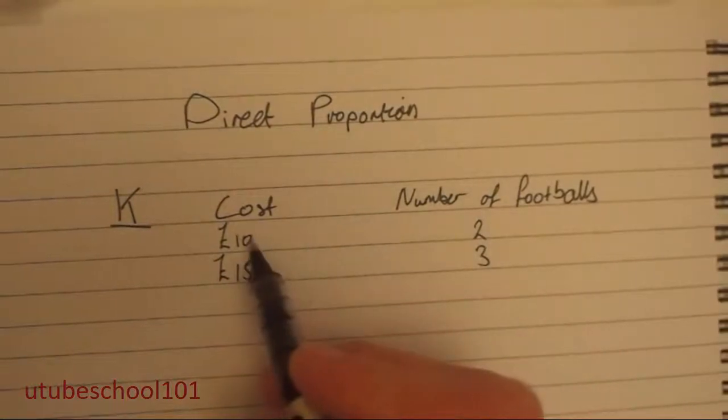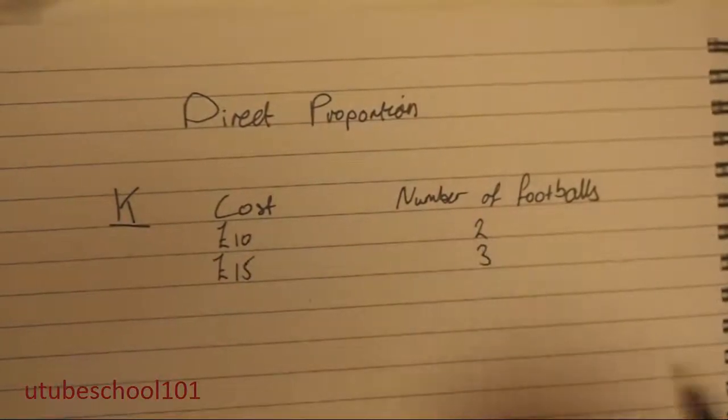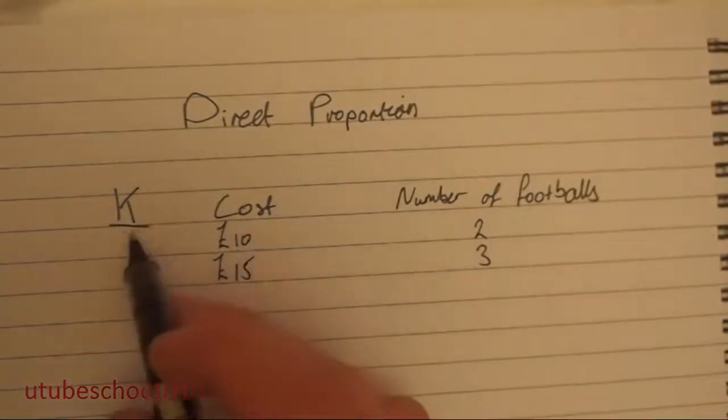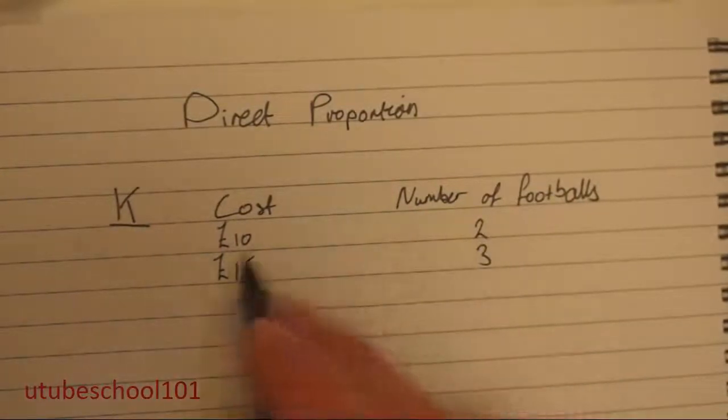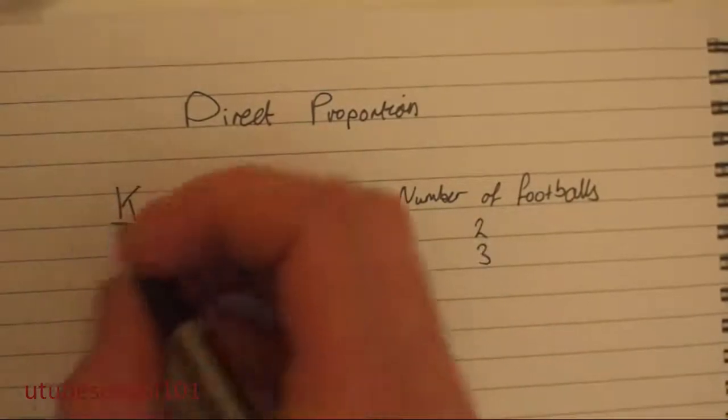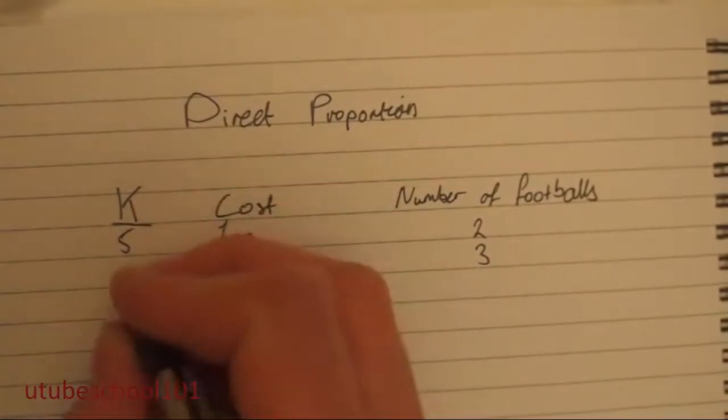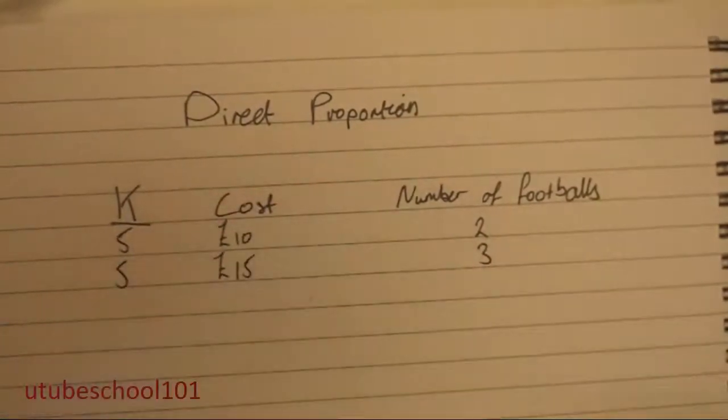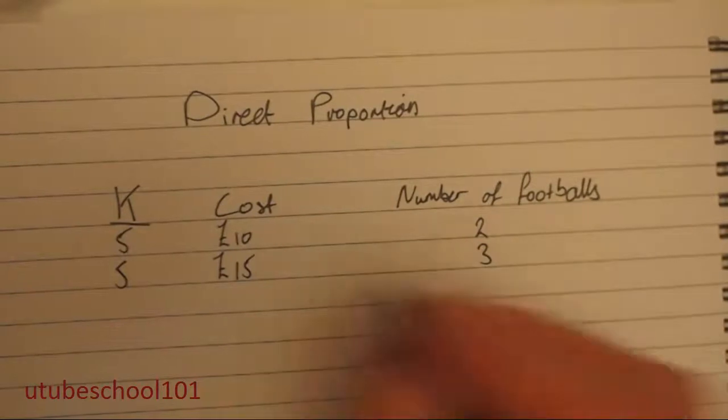And we work out this k by dividing the cost, so the output, by the k times the number of footballs. Perhaps we'll just sort these around to make it easier. But you just have to remember that the k value will always stay the same. And I can tell you why.